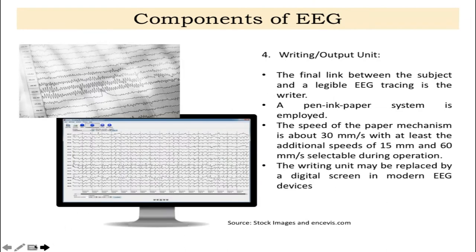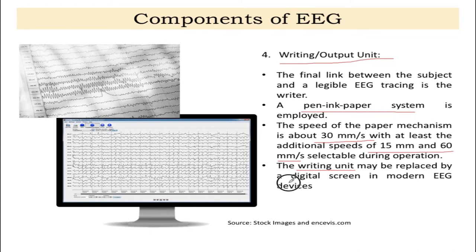After filtering, the output needs to be recorded. In older systems a pen-on-paper writing unit was used, where the paper speed — typically 30 mm/second with additional speeds of 15 and 60 mm/second — was important, since low speed would cause missing high-frequency components. Today the entire data comes in digital form on screen, which can be recorded digitally and analyzed.